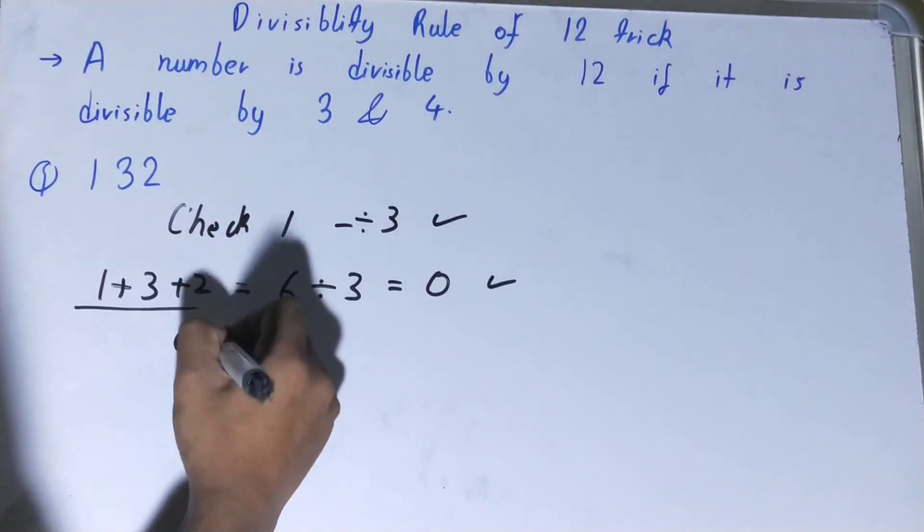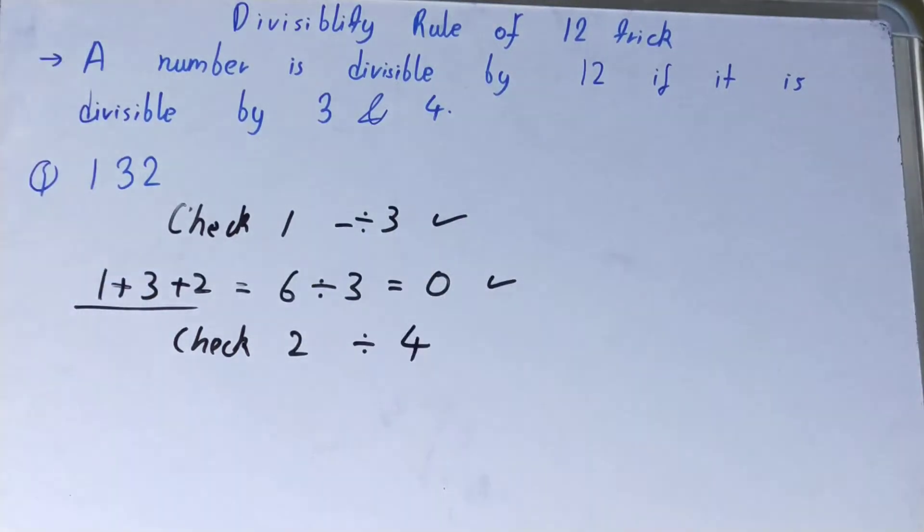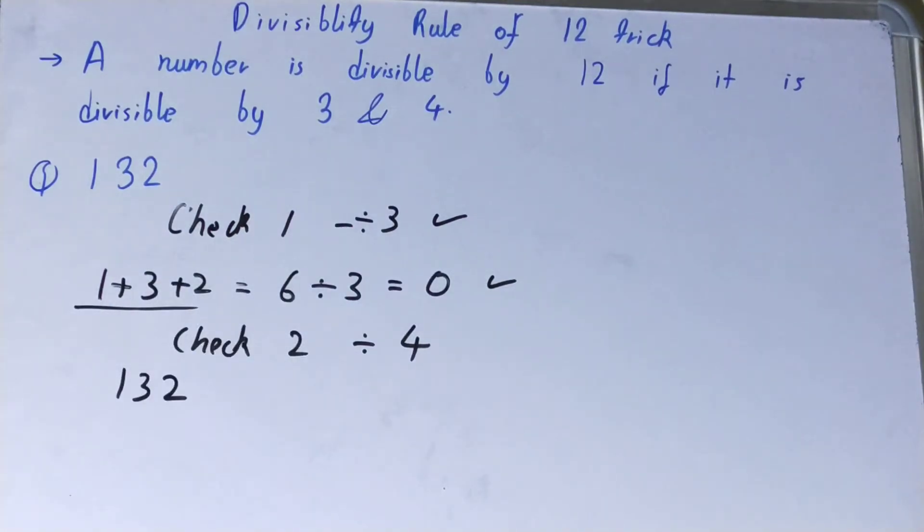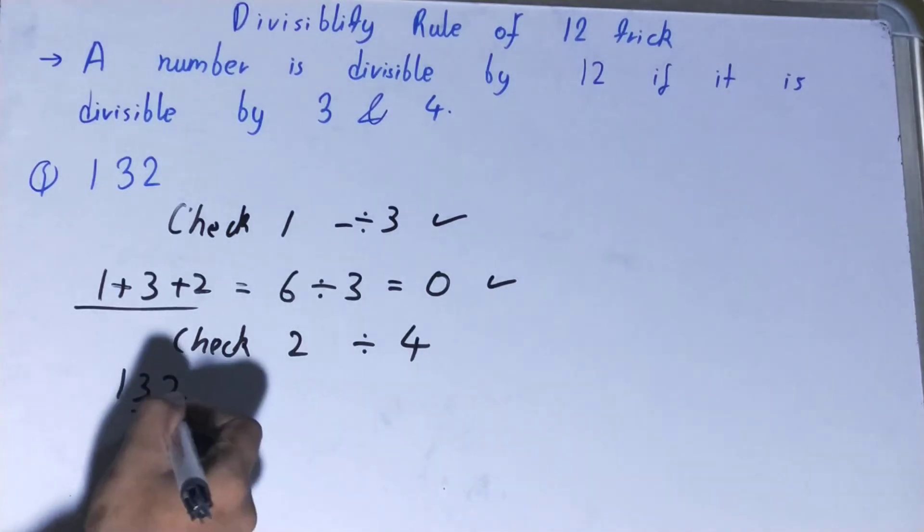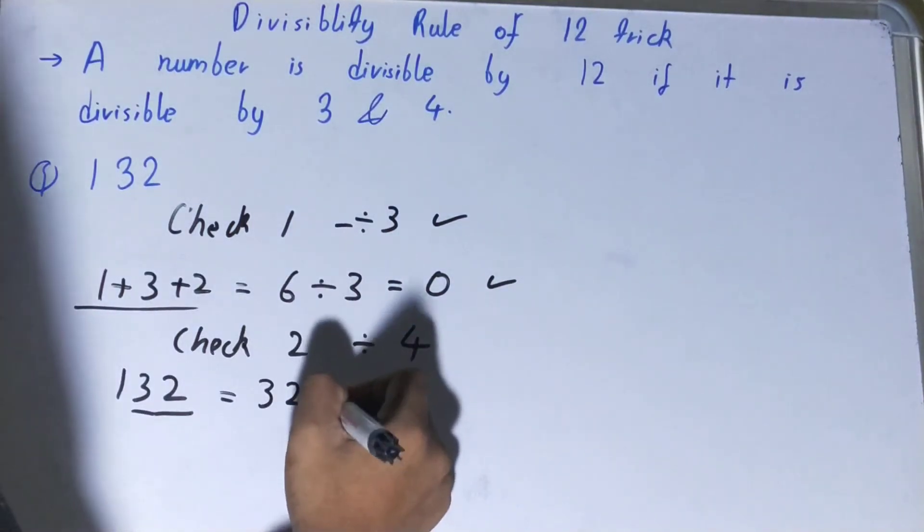Let's do check number 2. In check number 2, we will try to check whether it is divisible by 4 or not. For checking if any number is divisible by 4 or not, you take the last 2 digits - whether it is a 4 digit number, 5 digit number, 10 digit number, or a 3 digit number. You will take only the last 2 digits and check whether it is divisible by 4 or not.